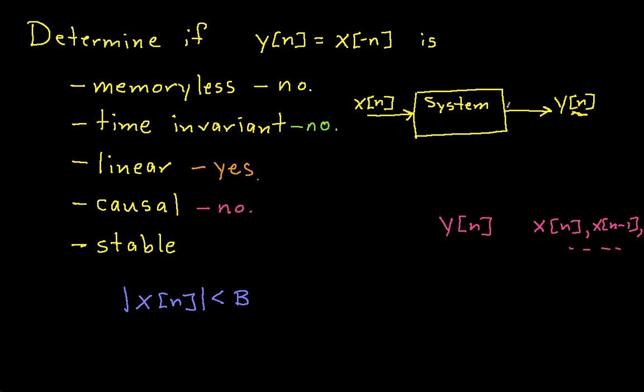Well, all this system does is it takes my x's, my inputs, and it reorders them in time, but it doesn't enlarge, it doesn't multiply them by anything, it doesn't add them, it doesn't do anything other than rearrange them in time. So if this is true for every n, then y[n] will also be less than B. So if this is true for every n, because y[n] is equal to x of some different n, it'll be true. So I can say that yes, the system is stable.